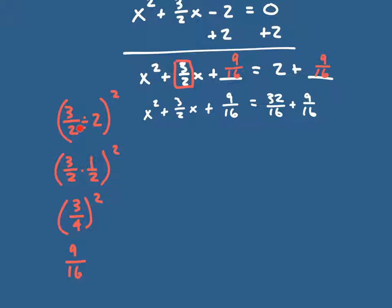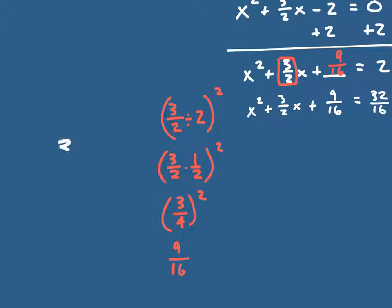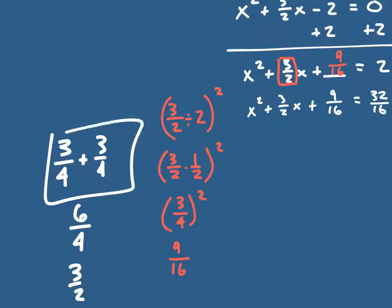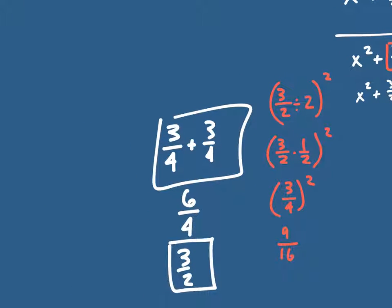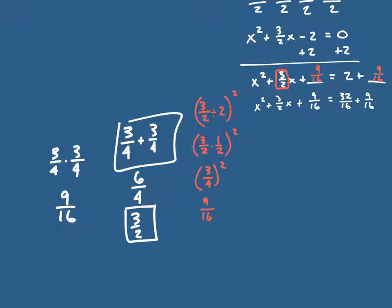The act of dividing the middle term by 2 is very important. It cuts that number into two parts: three-fourths and three-fourths. Three-fourths plus three-fourths gives six-fourths, which simplifies to three-halves — that's my middle term. And three-fourths times three-fourths gives nine-sixteenths, which is my last term.